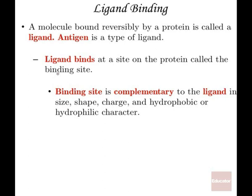Ligand binding refers to a molecule that's bound reversibly by a protein. The protein receptor is called the binding site. The ligand — also called the antigen, a term we'll use again in immunology — is a type of ligand. The binding site is complementary in shape to the ligand.